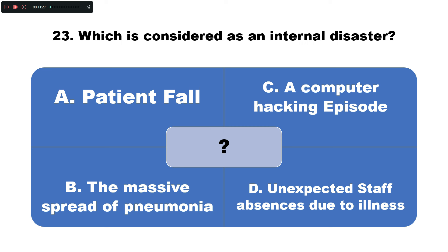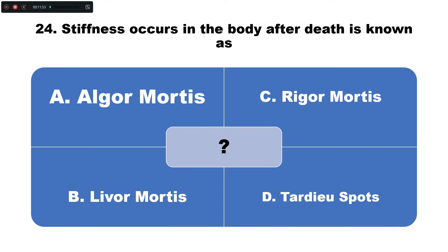Question number twenty-three: Which of the following is considered an internal disaster? Option A: a patient fall, B: massive spread of pneumonia, C: a computer hacking episode, D: unexpected staff absence due to illness. Question number twenty-four: Stiffness occurring in the body after death is known as — option A: algor mortis, B: rigor mortis, C: livor mortis, D: torgai spasms. The correct answer is option B — rigor mortis.